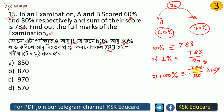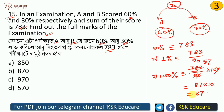783 divided by 9 gives 87. Then 87 multiplied by 10 equals 870. So the full marks of the examination is 870.